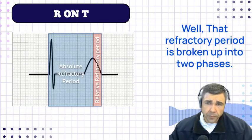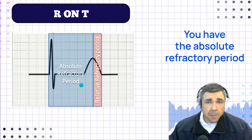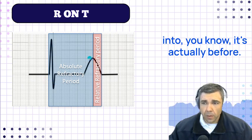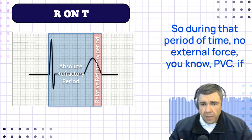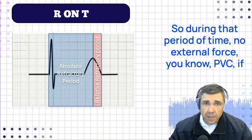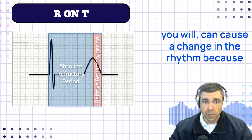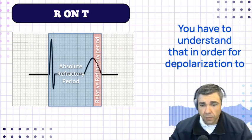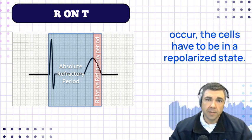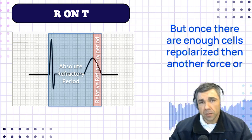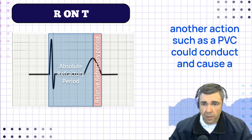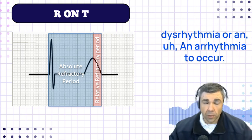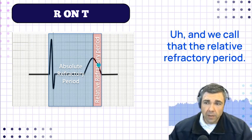Why is it a problem? That refractory period is broken up into two phases: the absolute refractory period and the relative refractory period. The absolute refractory period occurs before the halfway point of the T wave. During that period of time, no external force — no PVC — can cause a change in the rhythm because there haven't been enough cells repolarized for another depolarization to occur. In order for depolarization to occur, the cells have to be in a repolarized state. But once enough cells are repolarized, another force such as a PVC could conduct and cause a dysrhythmia to occur — and we call that the relative refractory period.